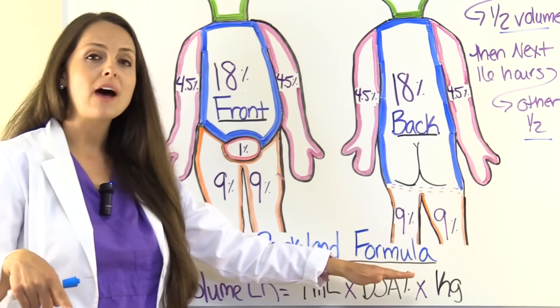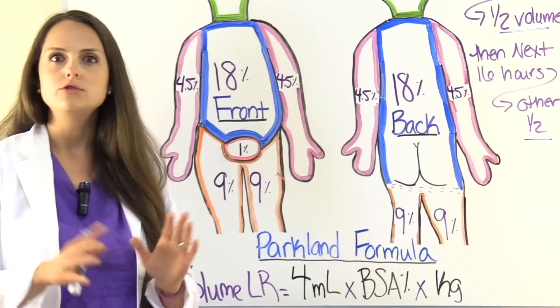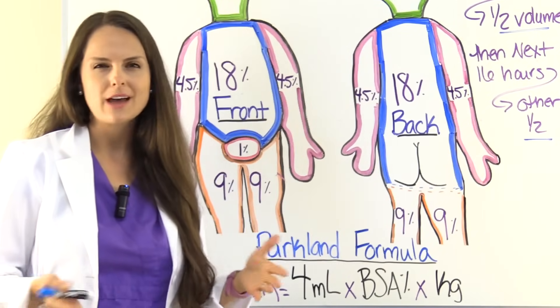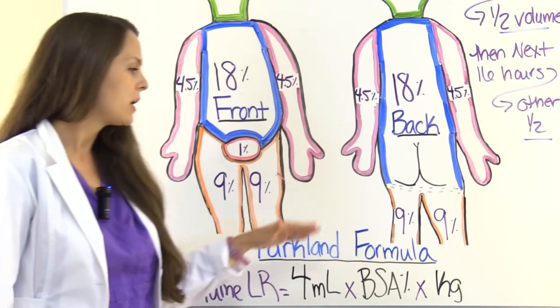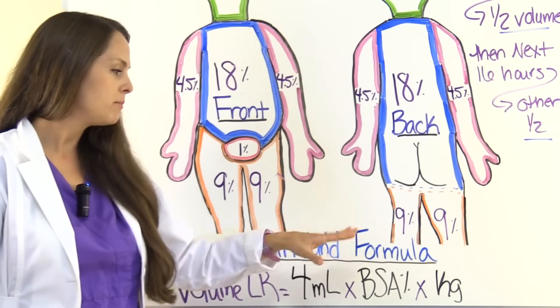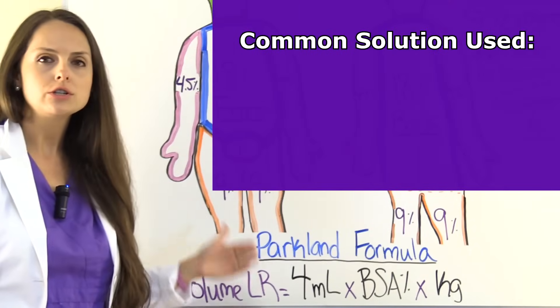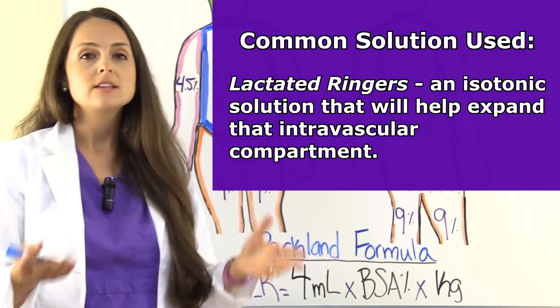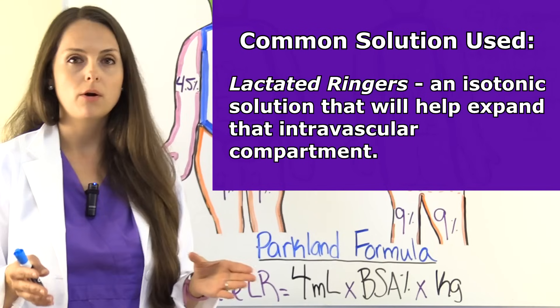So you need to know how to calculate that and you will do that by using the rule of nines. If you don't know how to do that, I have a video that can help you learn how to do that. It's really quick and easy because that's the whole backbone of working this calculation. Also, you need to know the patient's weight. And you will take the amount of fluid, multiply all that together, and you'll get the total volume. And the solution you usually use is lactated ringers, which is an isotonic solution that will help expand that intravascular compartment.